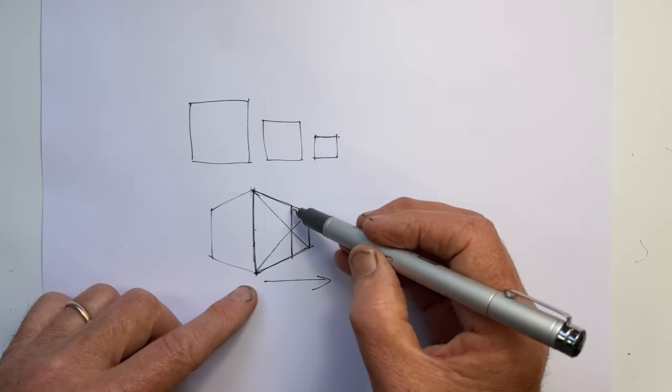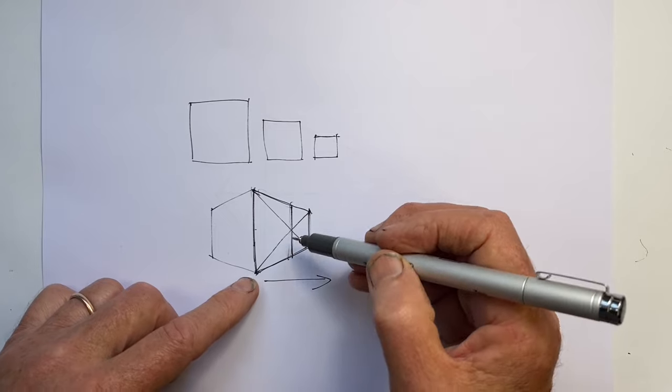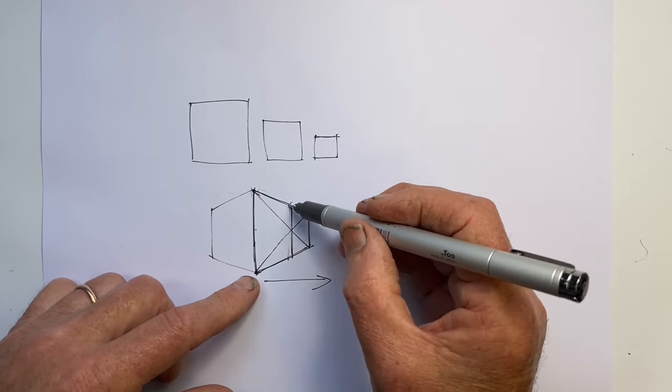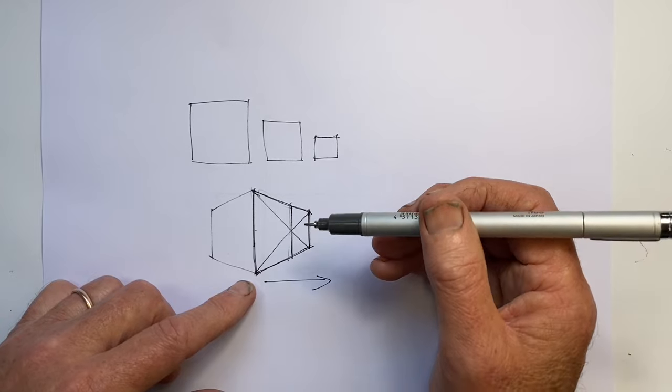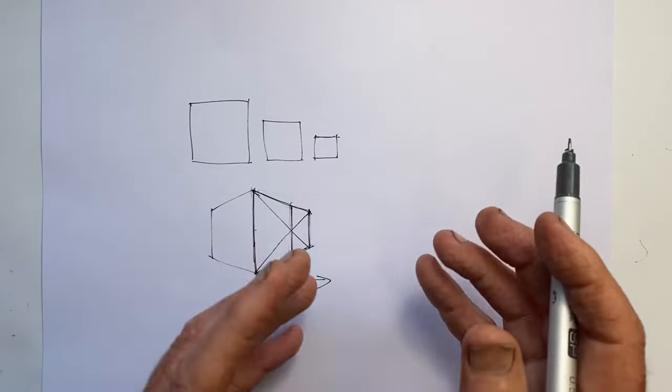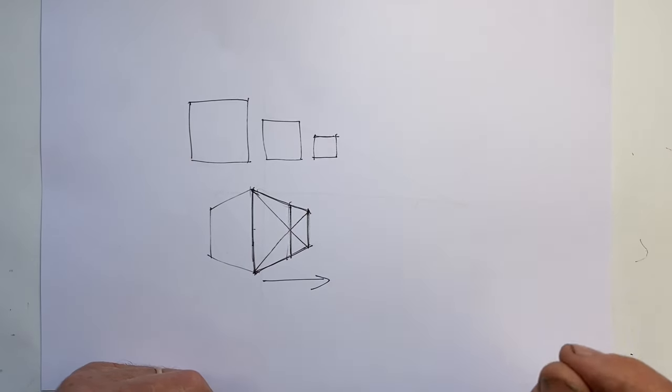And so the part of the building that's closer to us takes up more space than the part of the building further away, which has gotten smaller, which has narrowed. This is called foreshortening.